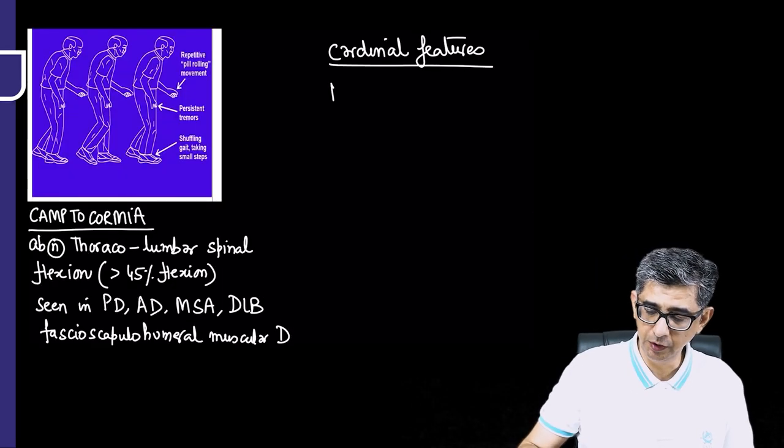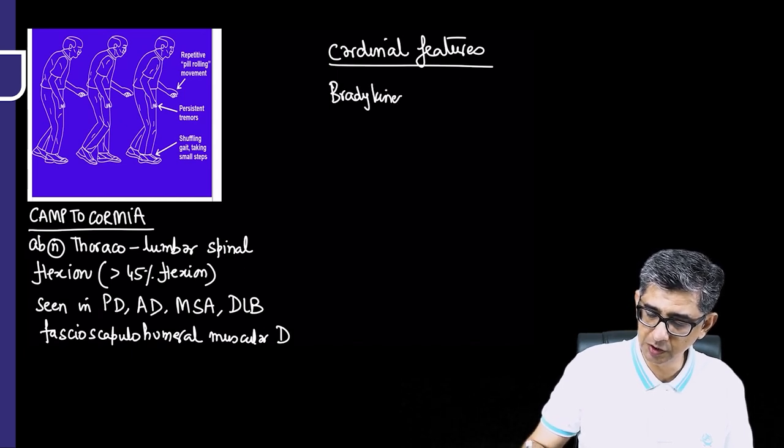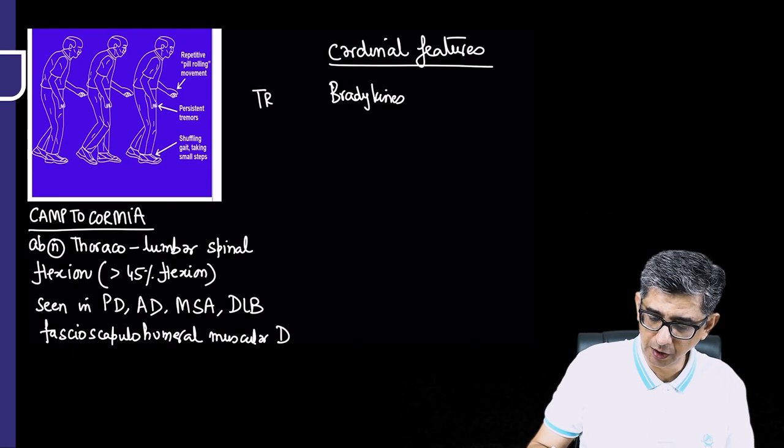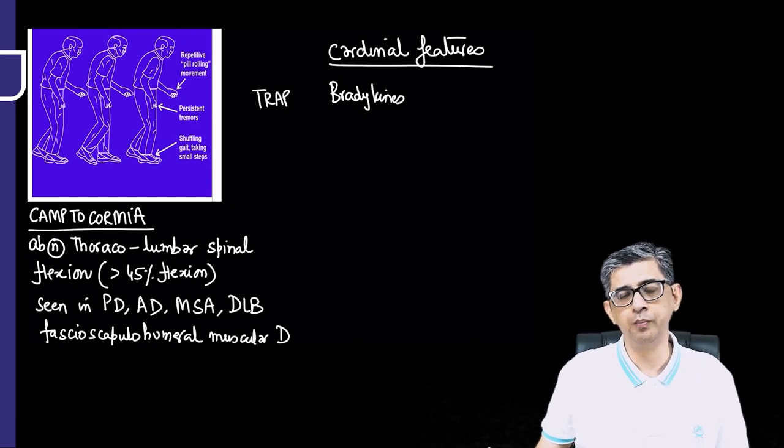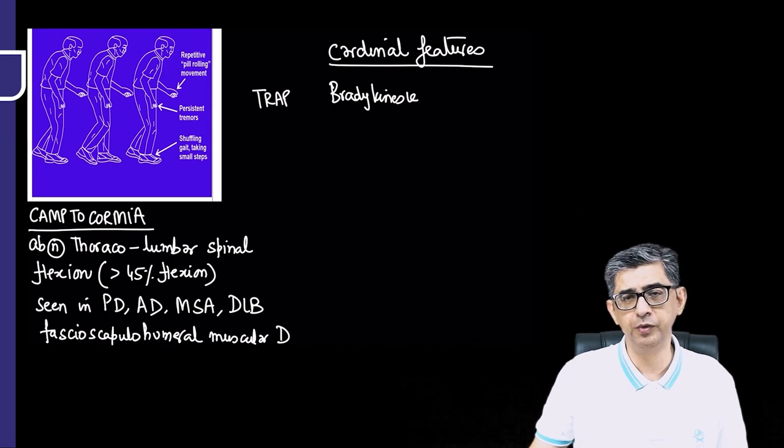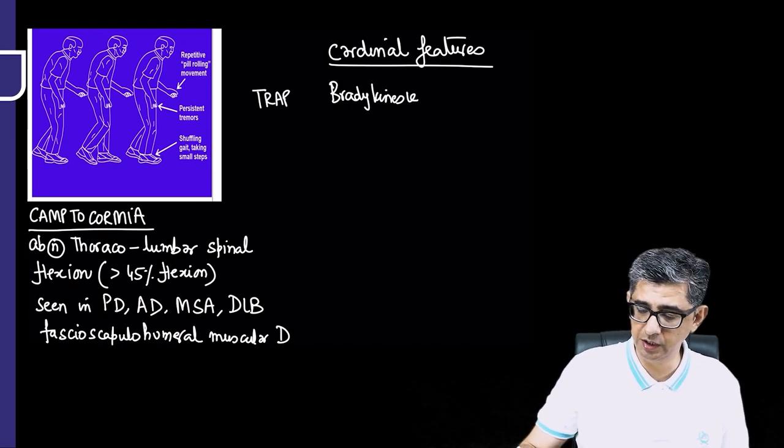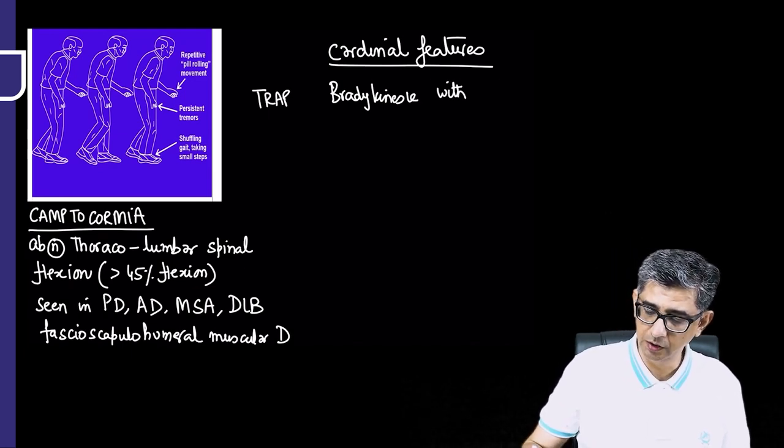Therefore, the cardinal features that we develop in these patients would be bradykinesia. In fact, the mnemonic that I can use for this is TRAP, but I will not write the data from the TRAP perspective. I will write it the way you should remember it from the diagnosis perspective, that is bradykinesia, and along with this they would be development of tremors.